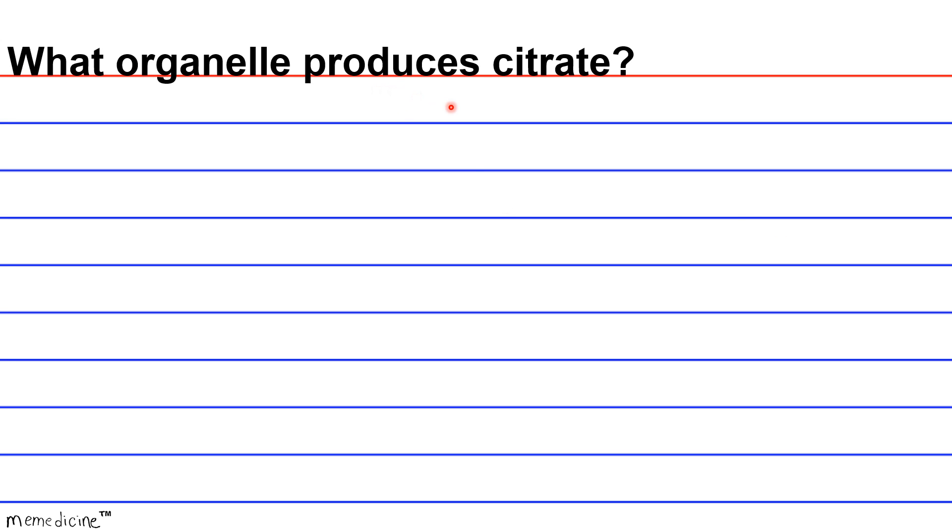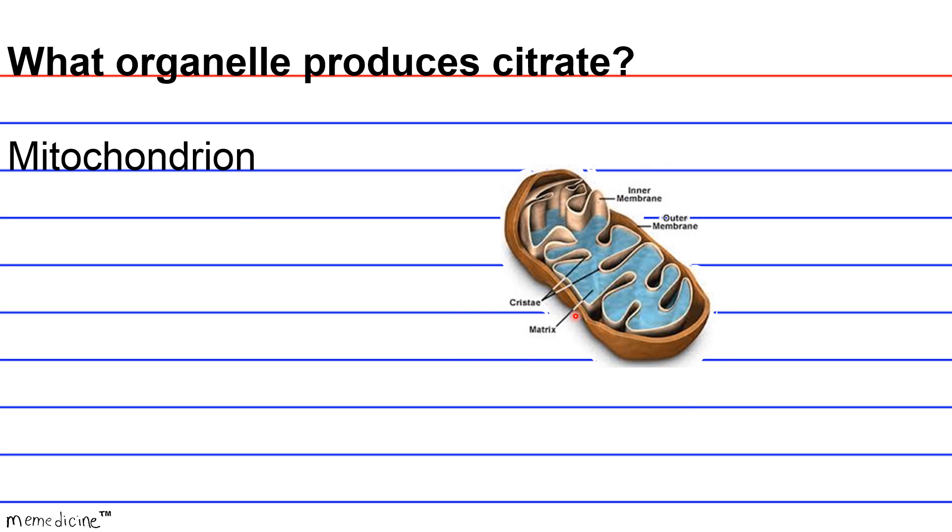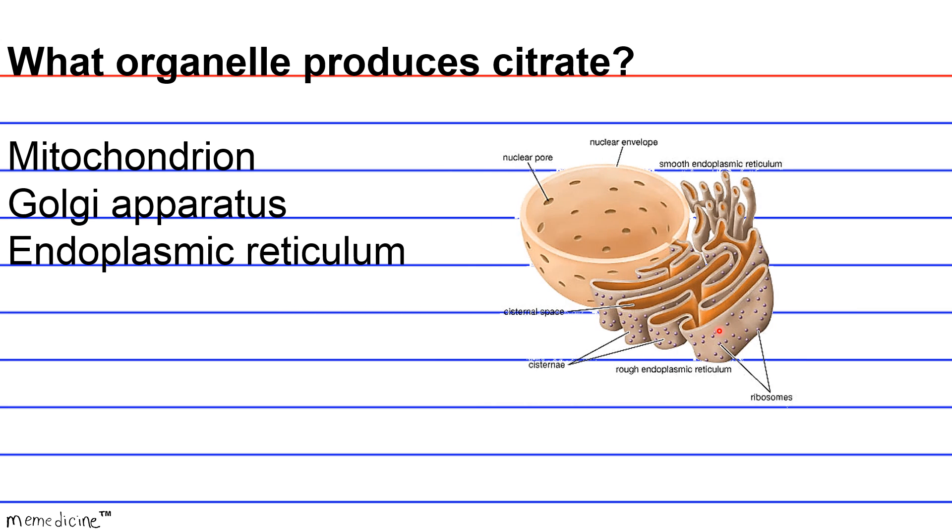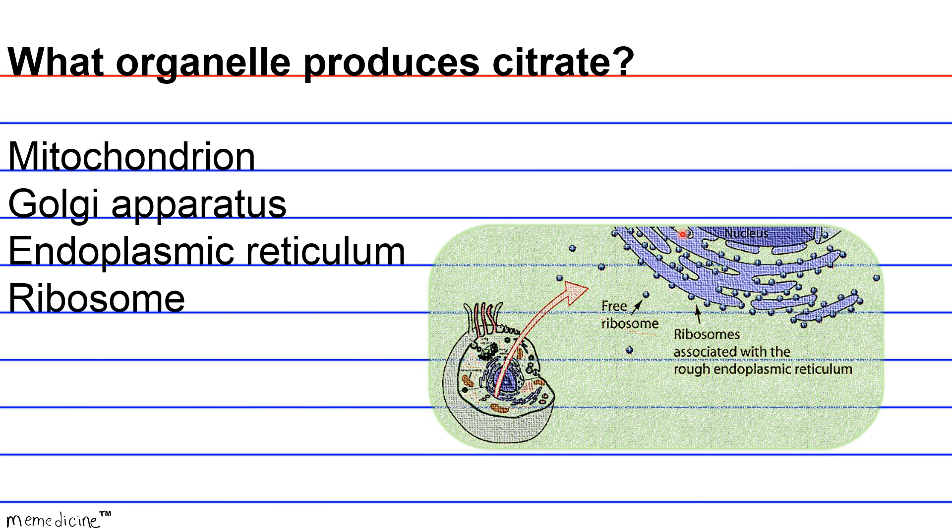What organelle produces citrate? So the answer is definitely in the passage. Hopefully you recall. Is it A, the mitochondria; B, the Golgi apparatus; C, the endoplasmic reticulum; or D, the ribosome? I'll give you a moment to think. Definitely press pause and open up a second window if you need to view the reading of the passage again to find the text support to select the correct answer choice.